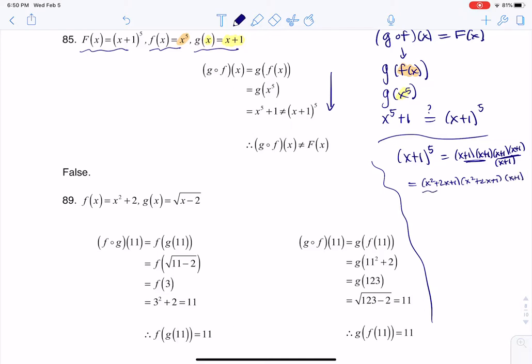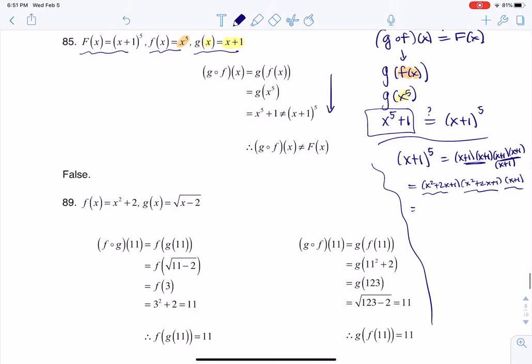And I want you to imagine if you foiled these or really distributed all of these together, would you be left with just x to the fifth plus one? And the answer is no. This is going to be a much, much uglier polynomial.